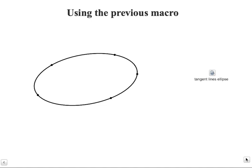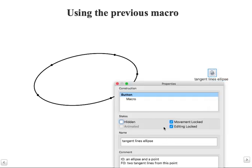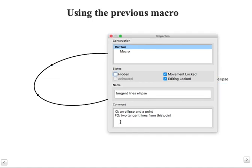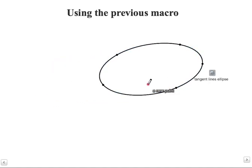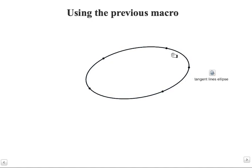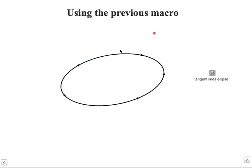Let us check that on this ellipse. And this macro, let us check how it works. You can see that we have to give an ellipse and a point and the final object will be the two tangent lines for these points. And you will see also there. From this point to this ellipse. Tangent line from this point to this ellipse.